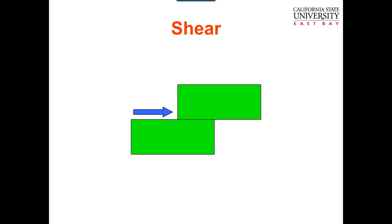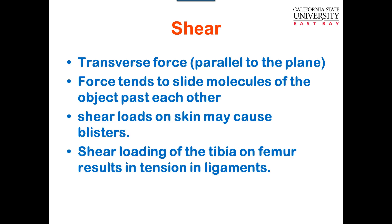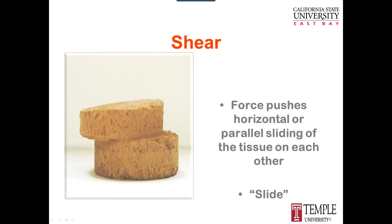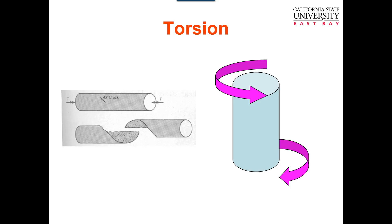Shear is kind of a frictional or sliding force, parallel to the plane — like if you rub your hands together, that's a shear force. The force tends to slide molecules of the object past each other. Shear loads on skin may cause blisters, which you've probably all experienced. Shear loading of the tibia on the femur results in tension in the ligaments. So you're starting to see the complexity of loads and injury, because one type of loading between two bones can result in tension in a different tissue.